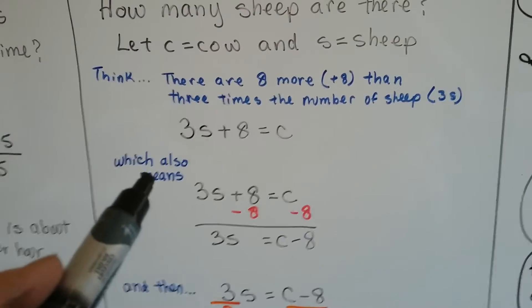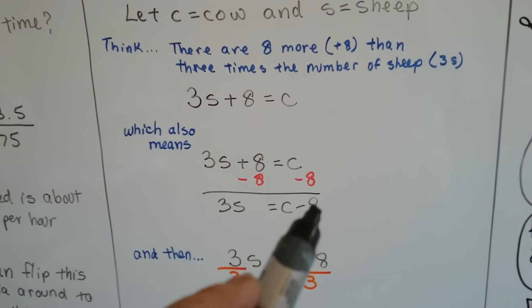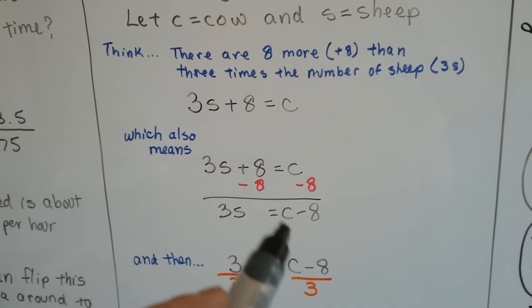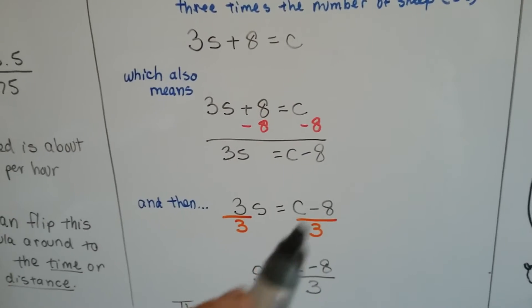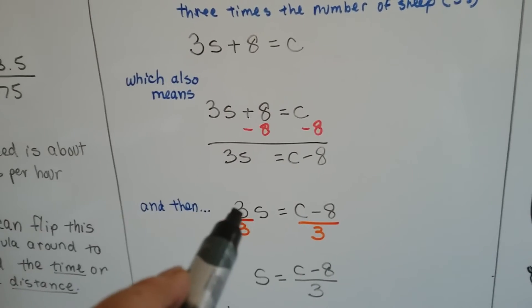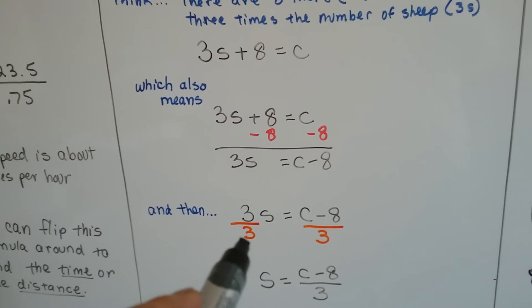But that also means that we could subtract eight from both sides and get 3S equals C minus eight. Three times the sheep equals the cows minus eight. And then we could divide both sides by three because this means multiplication and that would be the inverse to divide it to get the S by itself.